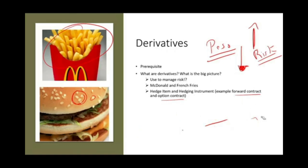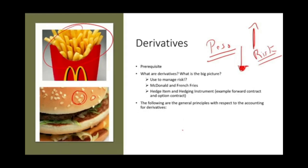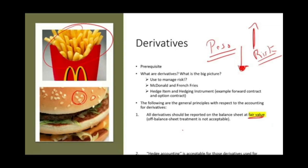This is the big picture — very important to understand. Now here's some information we need to know in respect to accounting for derivatives. All derivatives should be reported on the balance sheet at fair value. If the value of something goes up, you have to write it up; if the value goes down, you write it down. There is no off-balance sheet treatment — you cannot keep it off the balance sheet.